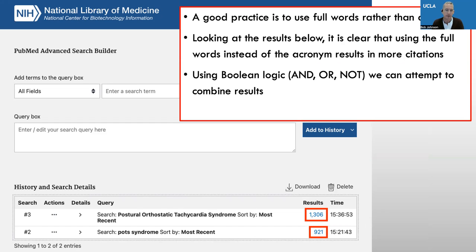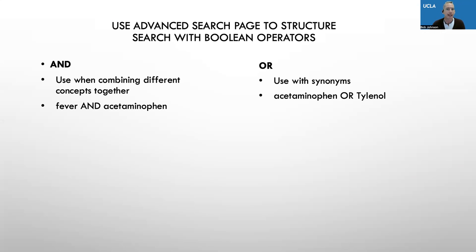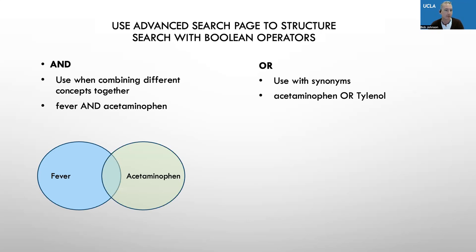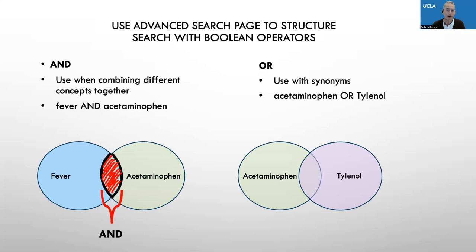I can use Boolean logic to combine these results and figure out where there is overlap or if they're giving me all the same results. Boolean logic is just a mathematical way of comparing sets of data, sets of information. When we use AND, we're looking for concepts that are overlapping where both concepts show up — so in this example, fever AND acetaminophen, we have one set of results for fever and another for acetaminophen, and we want the overlap. That's what AND does for us. Now, we also know that acetaminophen and Tylenol are synonyms. So if I'm looking for acetaminophen OR Tylenol, I don't want the overlap because either one works — I want either of them. OR gives us all those results.